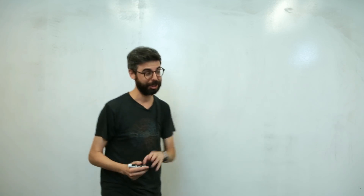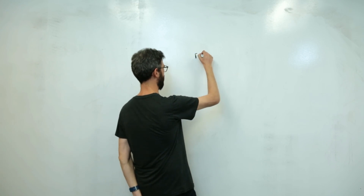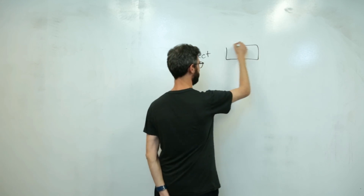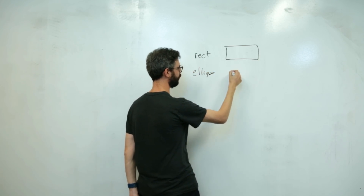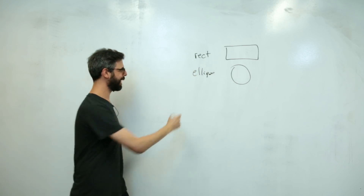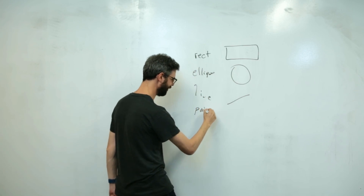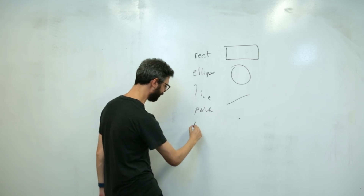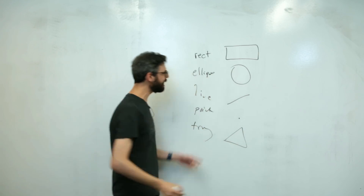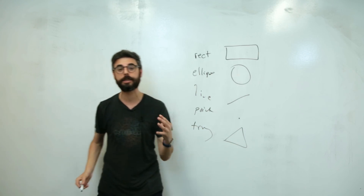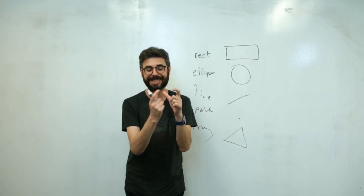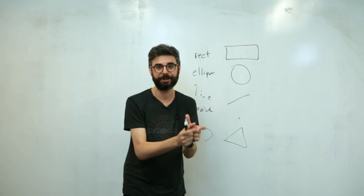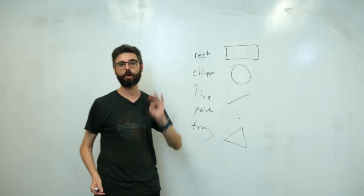What I'm talking about is custom shapes. So what do I mean by custom shapes? You might be familiar with a rectangle, or perhaps a circle, also known as an ellipse, or a line, a point, and a triangle. So there are a list of defined primitive shapes — primitive geometry, set kinds of polygons, set kinds of shapes — that you could call with a function and draw in P5.